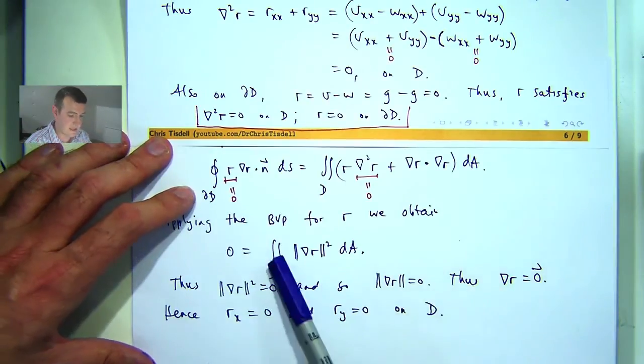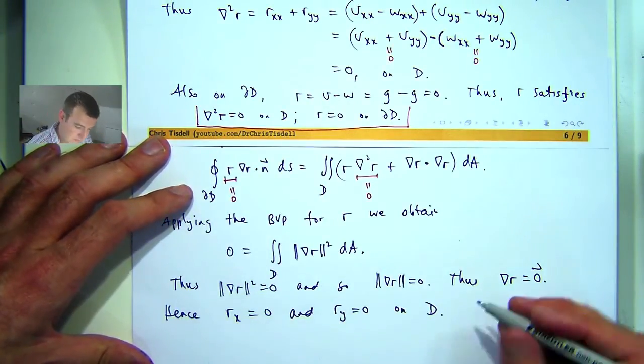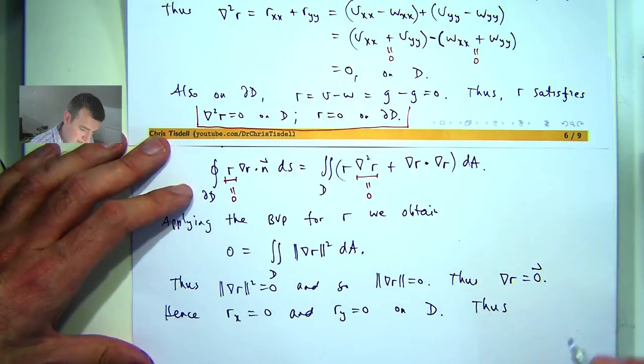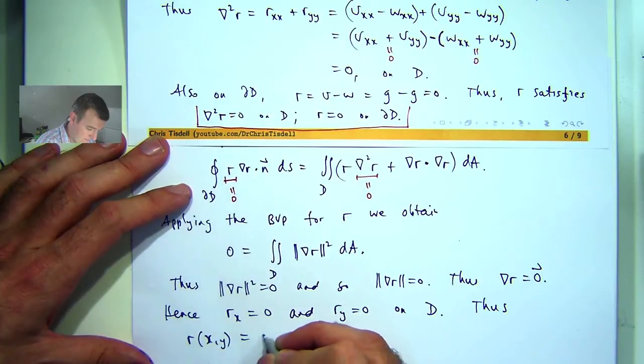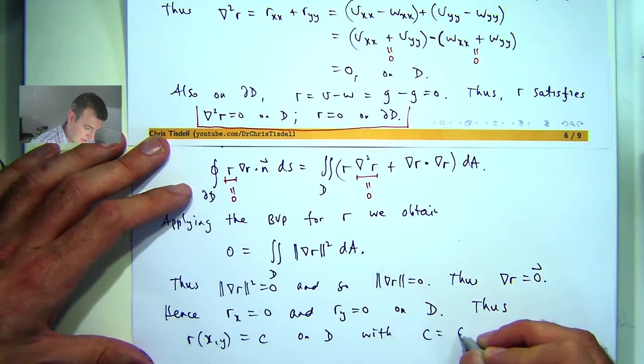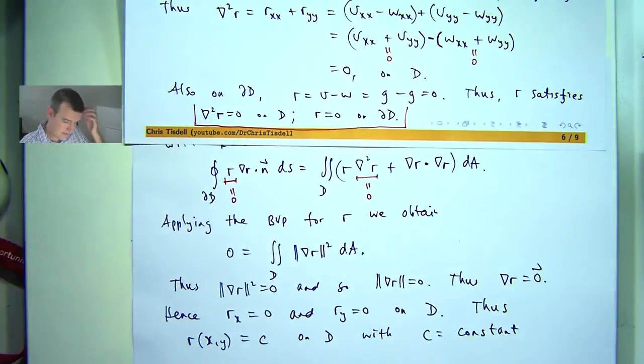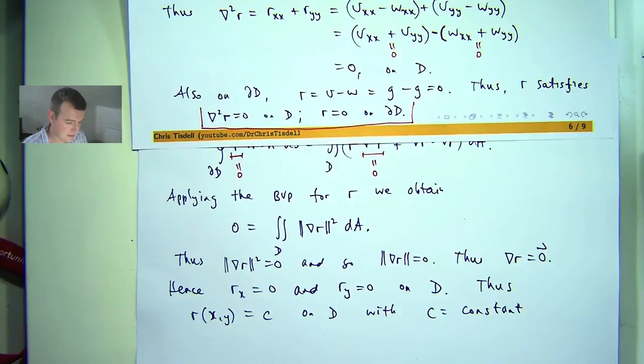Now, of course, we're working on the set D here. So if I integrate both of these, I'll get the following. There's some constant C such that R is equal to that constant on the set D.